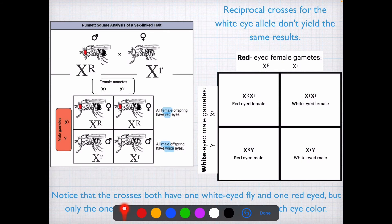So if you do the reciprocal cross, where we had red-eyed females and white-eyed males, so the opposite of what we previously did, then we would get different results. Here we get a red-eyed female, which is a heterozygote, and then we have a white-eyed female, who is a homozygote. Then down here we have a red-eyed male and a white-eyed male.